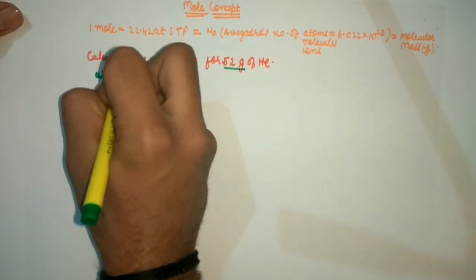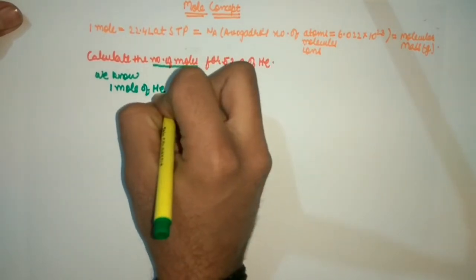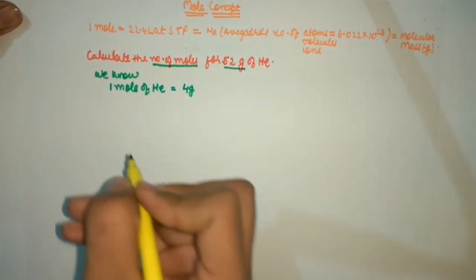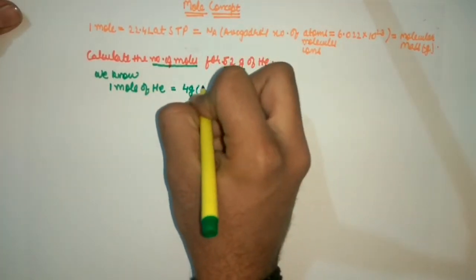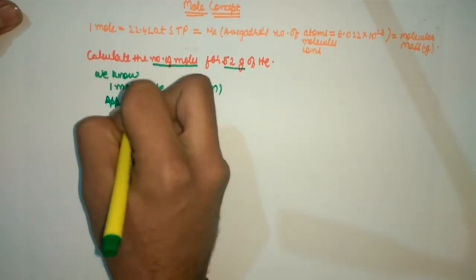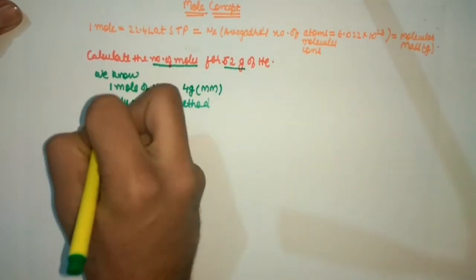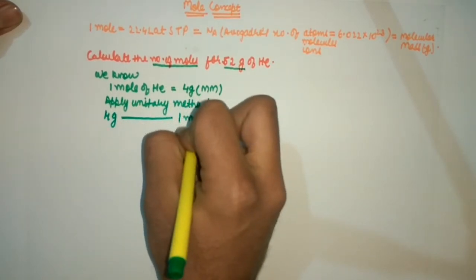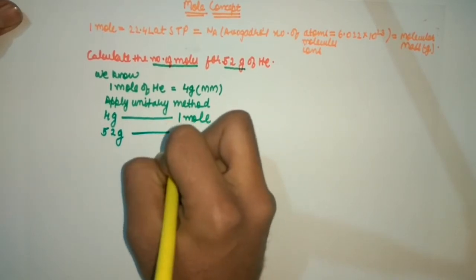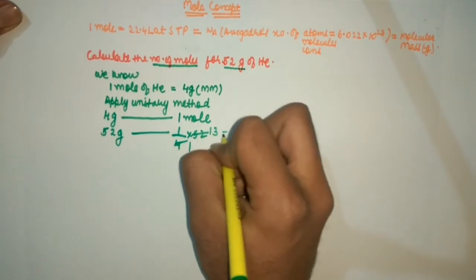We know one mole of helium is equal to — helium's molecular mass is four grams. So one mole of helium is four grams, which is the molecular mass of helium. Now we apply the unitary method: if 4 grams has one mole, then 52 grams has how many moles? 1 upon 4 into 52 = 13 moles.